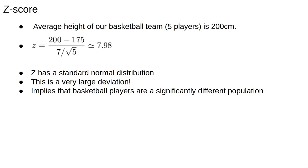This is very high. We expect z to be normally distributed with mean 0 and standard deviation 1. A value of 8 is very implausible, implying that basketball players are a significantly different population. This kind of analysis is the basis for the z-test.